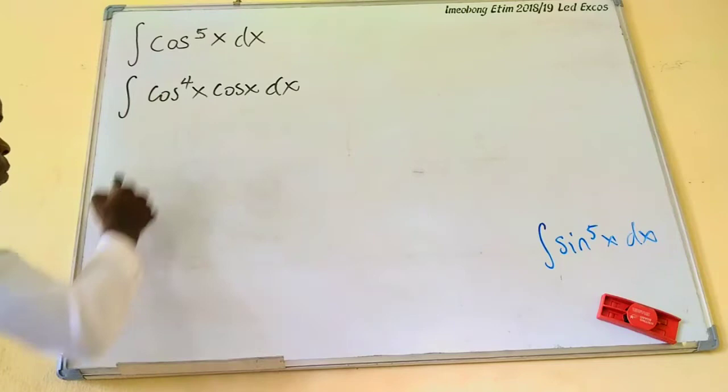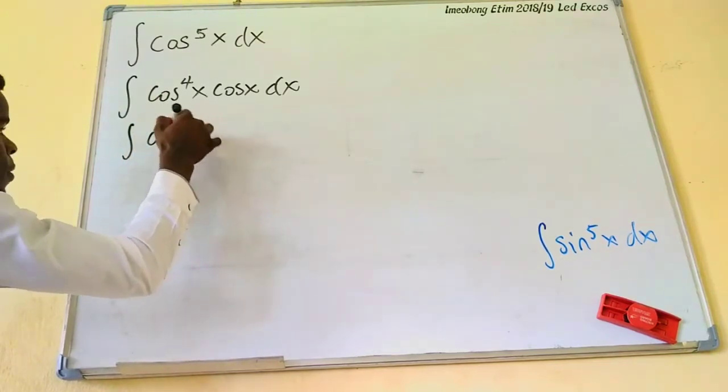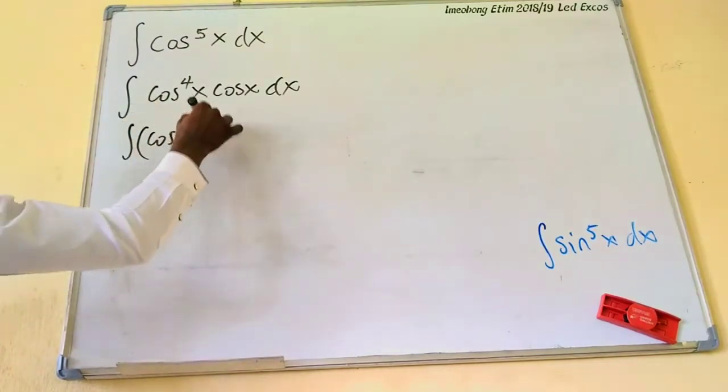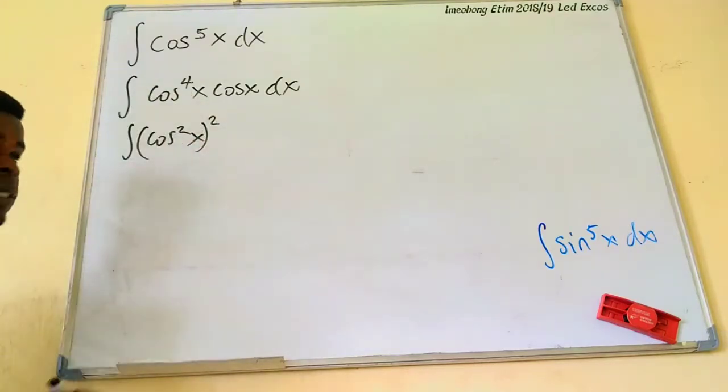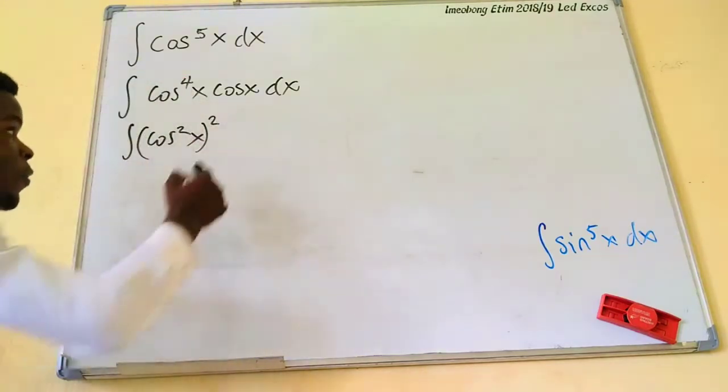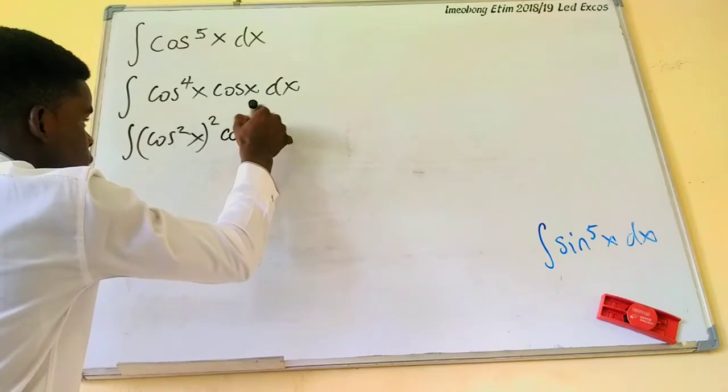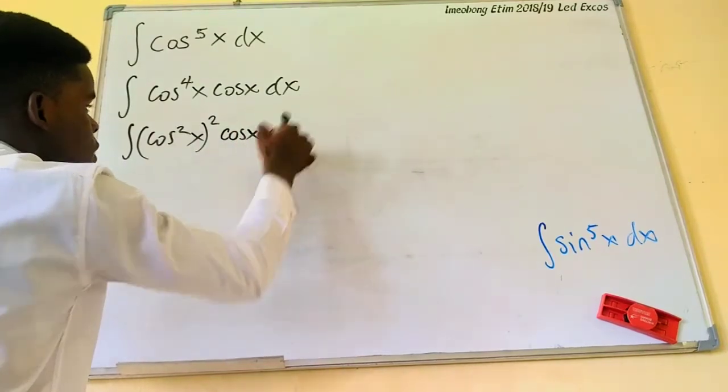So I'm going to write this one as cosine of square x. And I square it, alright? This is something I'm saying cosine to the fourth power of x. So I write this as cosine of x, and this is just dx.